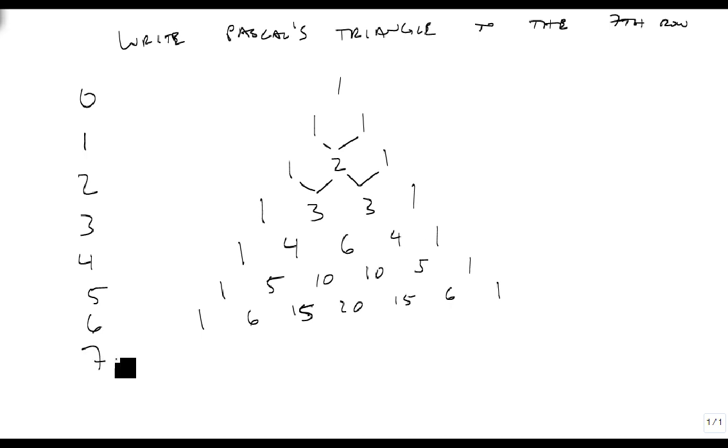And the 7th row, this is the one we care about. 1, 7, 21, 35, 35, 21, 7, 1. And we have now written this out to the 7th row.